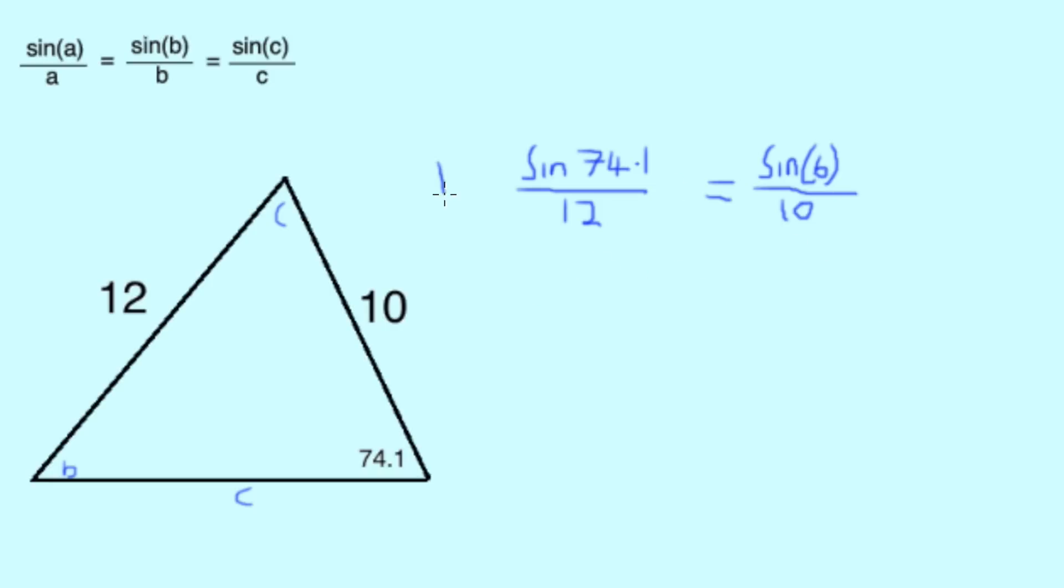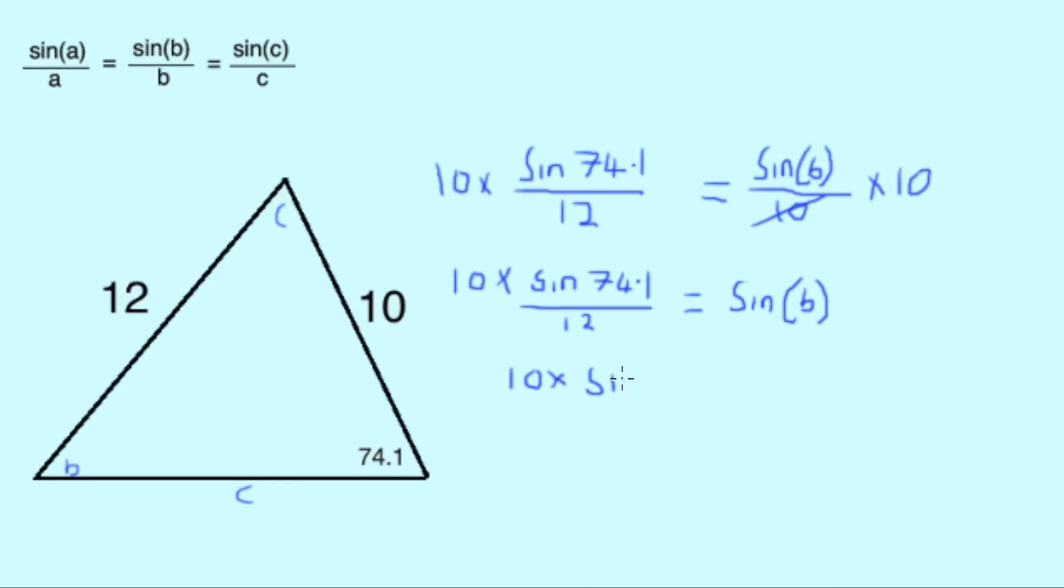This isn't enough information alone, so what we need to do here now is times each side by 10 to remove our side B from the equation. When this is done, we see that 10 becomes cancelled out in our second equation, leaving 10 times sine 74.1 over 12, which is equal to sine B. Using a calculator, 10 times sine 74.1 over 12 equals 0.8015, the sine of angle B.